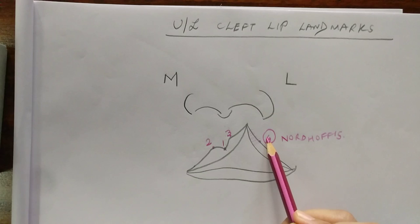Now all these landmarks are actually made onto the white roll and not in the vermilion, and they are tattooed before surgery.